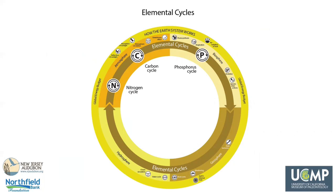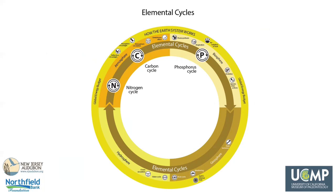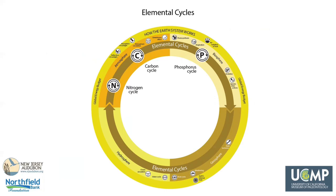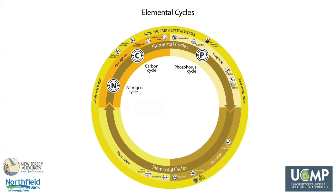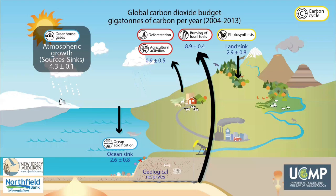Fundamental to how the Earth works is the cycling of elements such as carbon, nitrogen, and phosphorus through the four spheres. For example, carbon in the form of carbon dioxide is captured from the atmosphere by photosynthesizing plants and is released back into the atmosphere through processes such as respiration, decay, and from the burning of fossil fuels. Nitrogen and phosphorus are essential nutrients for life on Earth — these elements are essential to components of proteins and genetic material. This diagram shows some parts of the carbon cycle, including some of the ways carbon dioxide moves among the four spheres.